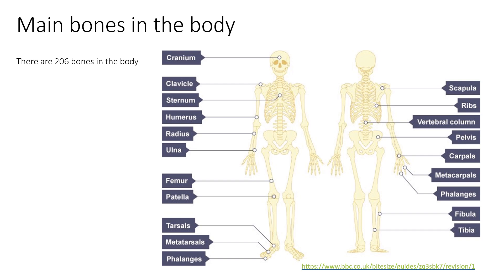There are 206 bones in the body and these are the main ones. You can see here: cranium, clavicle, sternum, humerus, radius, ulna, femur, patella, scapula, ribs, vertebral column, pelvis, carpus, metacarpus, phalanges, fibula and tibia.